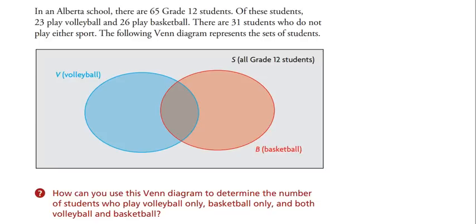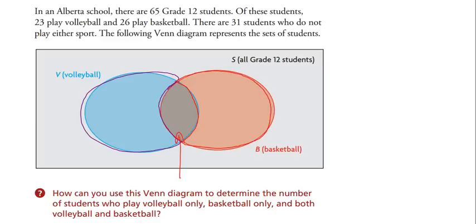We have 65 students to distribute in this diagram according to only volleyball — just the blue area — only basketball, which is the red area, and the overlap, which represents ones who play both. It's the overlap of volleyball players and basketball players.